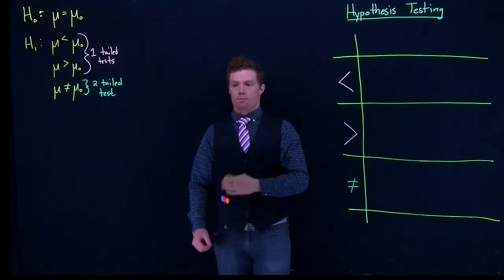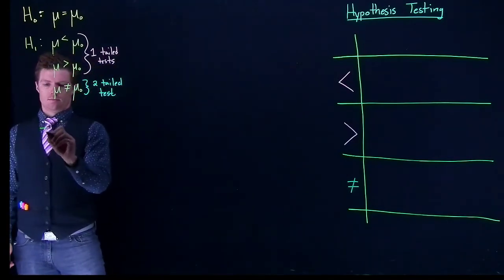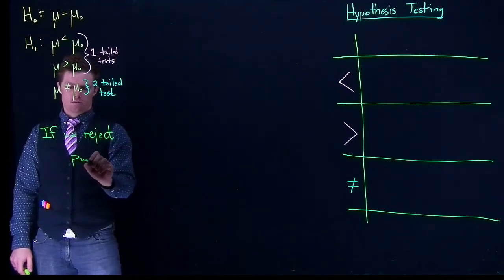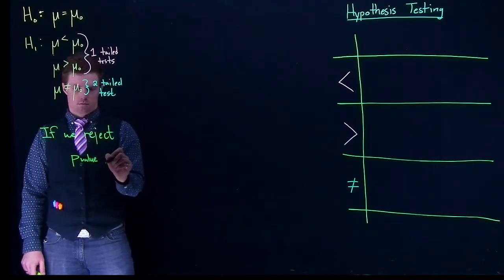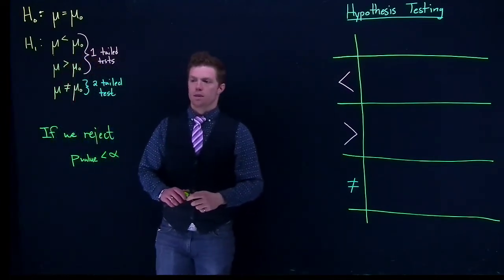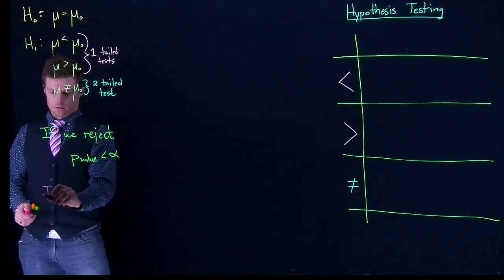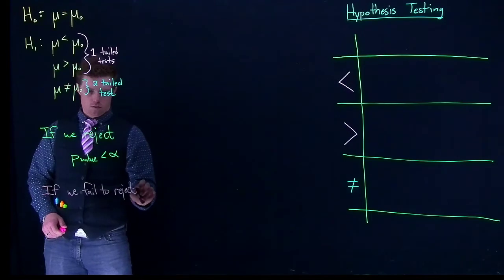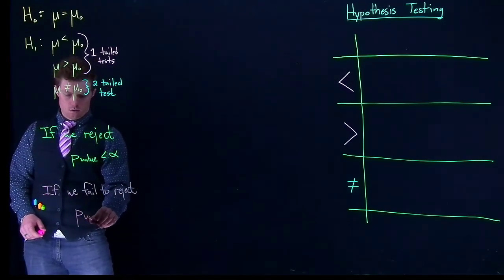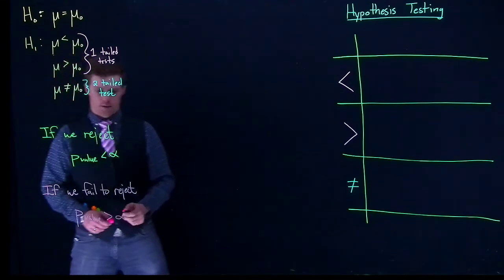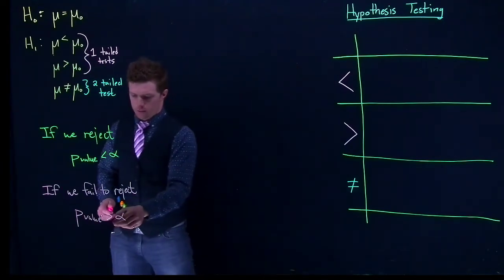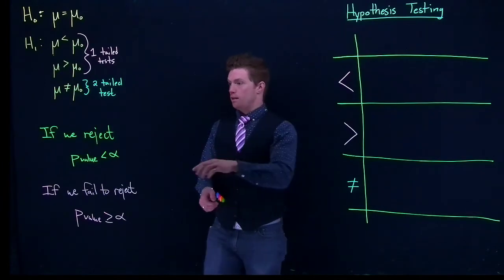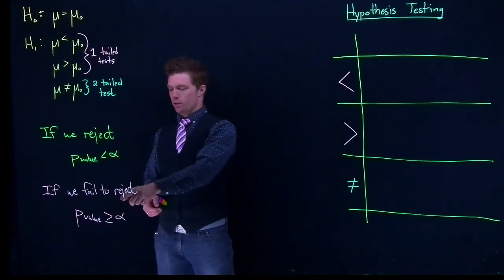So in order to reject the null hypothesis, if we reject in all of these, it's going to be that our p-value is less than our alpha value. And if we fail to reject, our p-value is going to be greater than or equal to alpha.